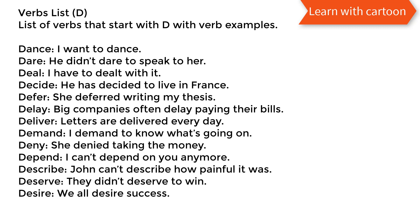Verbs list D. List of verbs that start with D with verb examples. Dance: I want to dance. Dare: he didn't dare to speak to her. Deal: I have to deal with it. Decide: he has decided to live in France. Defer: she deferred writing her thesis. Delay: big companies often delay paying their bills. Deliver: letters are delivered every day.